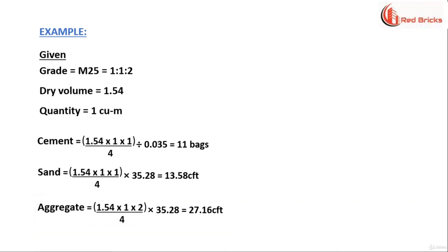Therefore, in 1 cubic meter of grade M25 concrete, we have 11 cement bags, 13.58 cubic feet sand and 27.16 cubic feet aggregate.